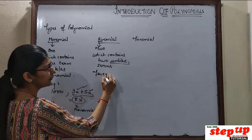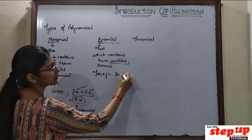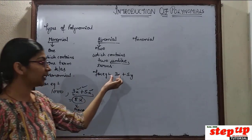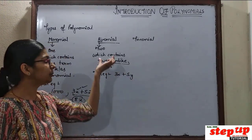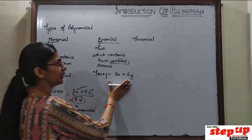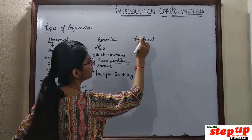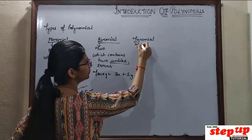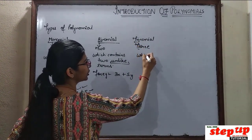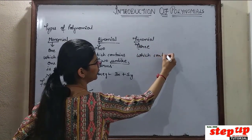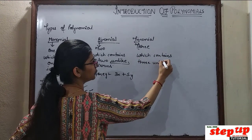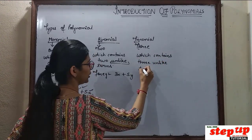For example, take 3x plus 5y — both are completely different from each other, two unlike terms. This can be called binomial. Next, trinomial — which contains three unlike terms. Unlike is necessary to write.